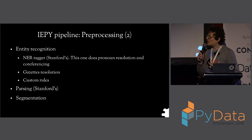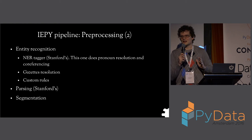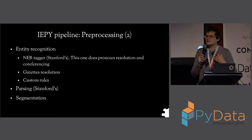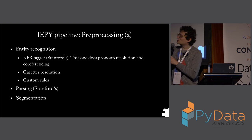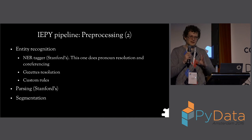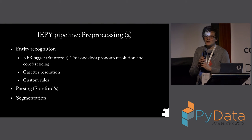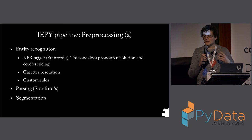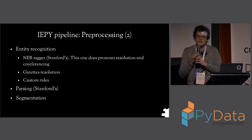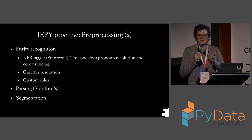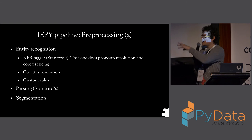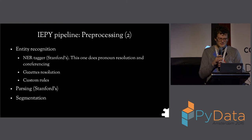One critical part is entity recognition, because before identifying relations you need to identify where entities are mentioned in the text. The Stanford named entity recognition tagger is pretty good for specific entity types like names, places, dates, and amounts of money. But you can also look up entities in a gazetteer — a list of names — or add custom rules if you're working with something that has a specific form, like chemical compounds or proteins. A lot of metadata about the document is stored during preprocessing into the database.